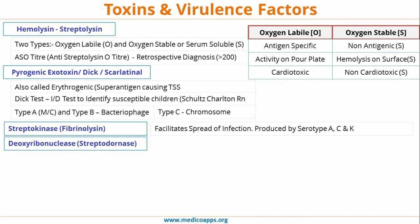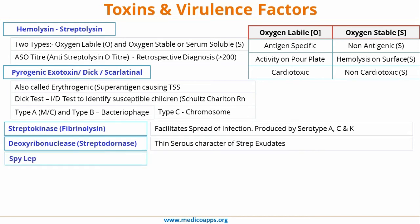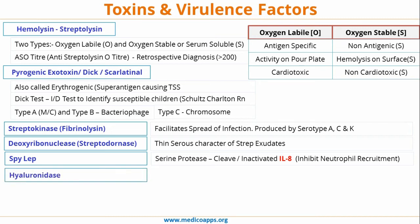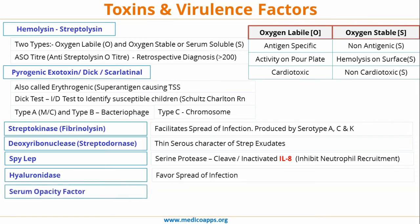Streptokinase, also known as fibrinolysin, facilitates the spread of infection and is produced by serotypes A, C, and K. Deoxyribonuclease, also called streptodomase, is responsible for the thin serous character of streptococcal exudates. SpEB is a serine protease that cleaves and inactivates interleukin-8, thereby inhibiting neutrophil recruitment. Interleukin-8 is normally responsible for neutrophil recruitment at any site of infection or injury.